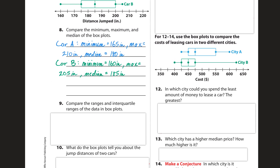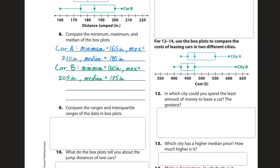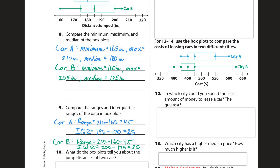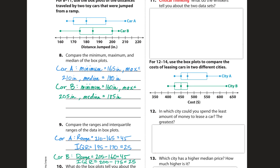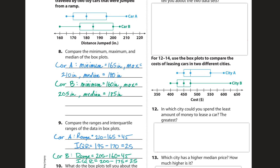Number nine asks us to compare the ranges and interquartile ranges of the data in the box plots. For car A, the range is 210 minus 165, which equals 45. The interquartile range is the range of the box — the upper quartile minus the lower quartile — which is 195 minus 170, giving us 25.